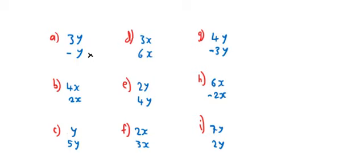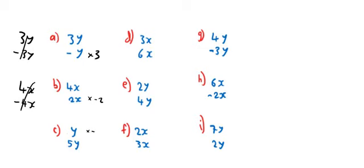So the first one here, I hope you can see that you just multiply it by 3, and then you'd get 3y on top and minus 3y on the bottom. The second one: because they're both positive, positive 4x and positive 2x, you'd have to multiply one of them by a minus. So if you multiply the bottom there by minus 2, you'd get 4x on top and minus 4x on the bottom. The third one: they both have the same signs again, so I'd multiply the top by minus 5 to get minus 5y on top and 5y on the bottom.